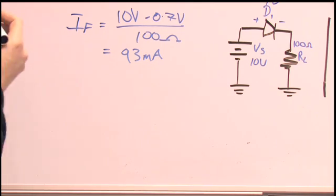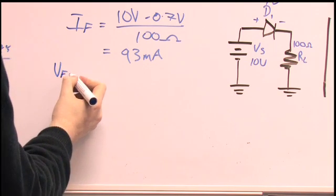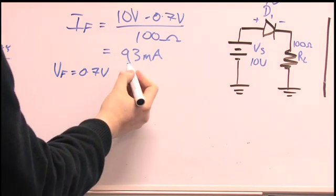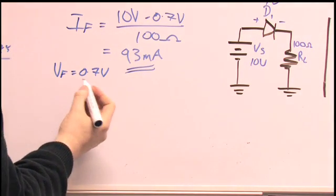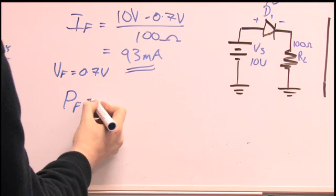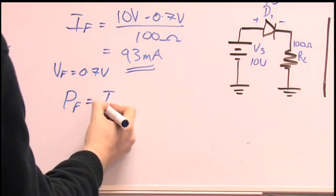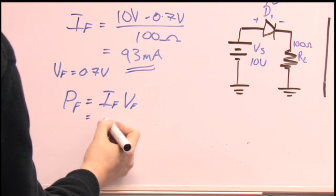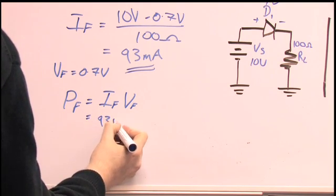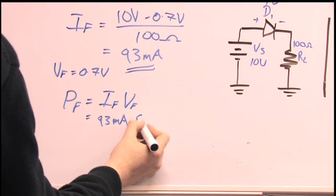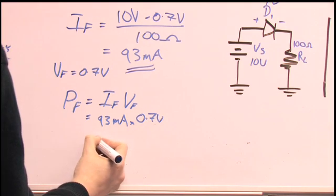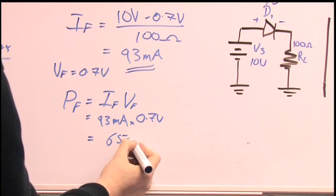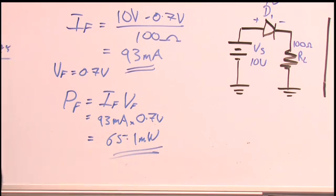Now, since we have that voltage drop across the diode equal to 0.7 volts, we also have our forward current, 93 milliamps. We can calculate the power by multiplying the current by the voltage. So, we plug in those values, 93 milliamps multiplied by 0.7 volts. We get our forward power, which is 65.1 milliwatts. And that's your answer.